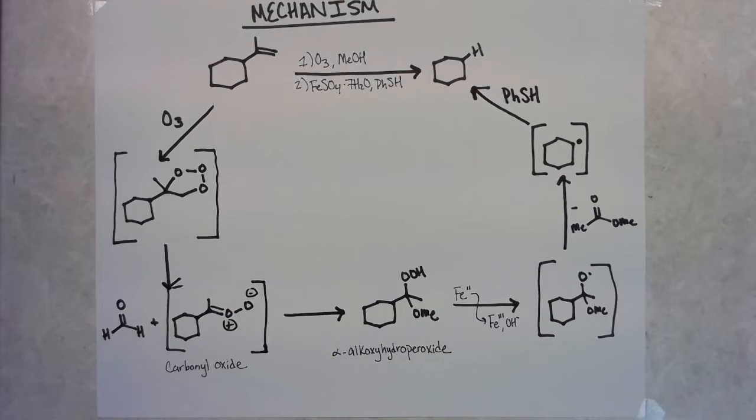Another interesting thing to note here is the hydrogen atom donor in this case is benzene thiol. And the reason that works is the sulfur hydrogen bond here has a really low bond dissociation energy. I think it's 79 kilocalories per mole, whereas normal CH bonds are around 100 kilocalories per mole. So basically what that means is that the alkyl radical that's formed in situ can abstract that hydrogen relatively easily.